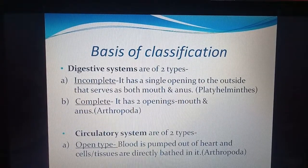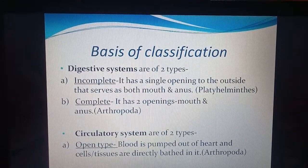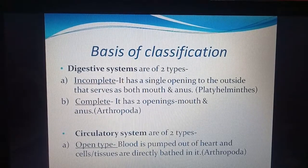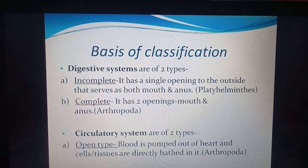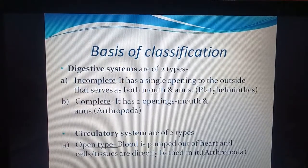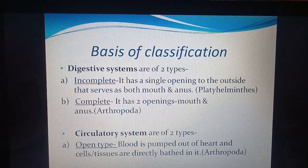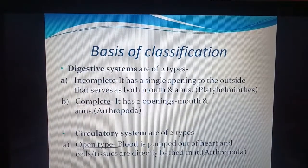The digestive system is of two types. Incomplete: it does not have two openings — only a single opening to the outside, used both as mouth and anus, so food enters and waste is released from the same opening. Example: platyhelminthes or flatworms. In a complete digestive system there are two openings — a mouth for entry of food and anus for ejection of waste material. Example: arthropoda, which includes insects like cockroach.